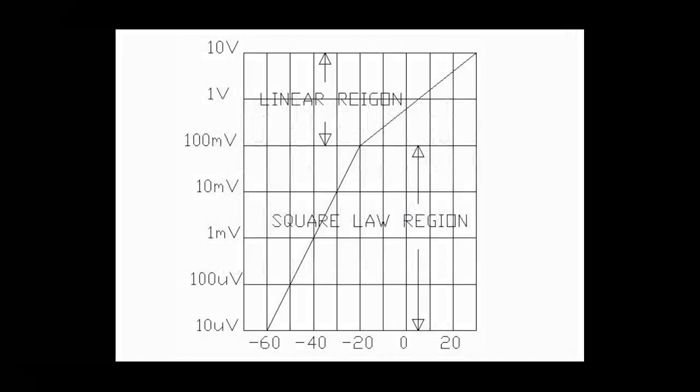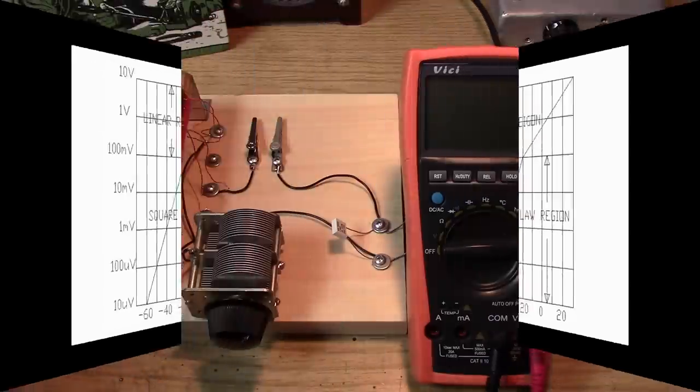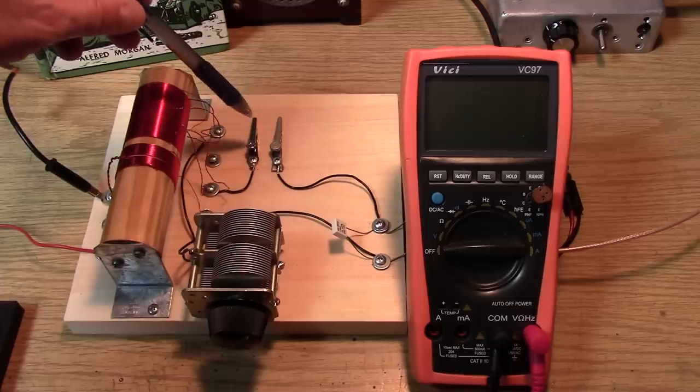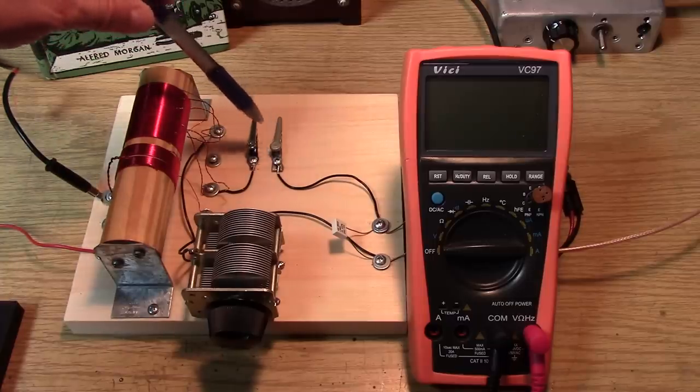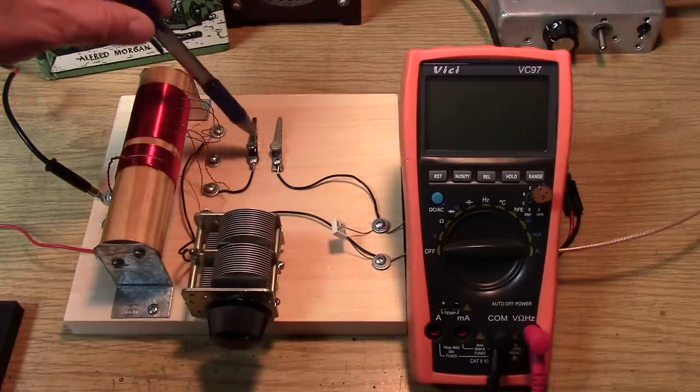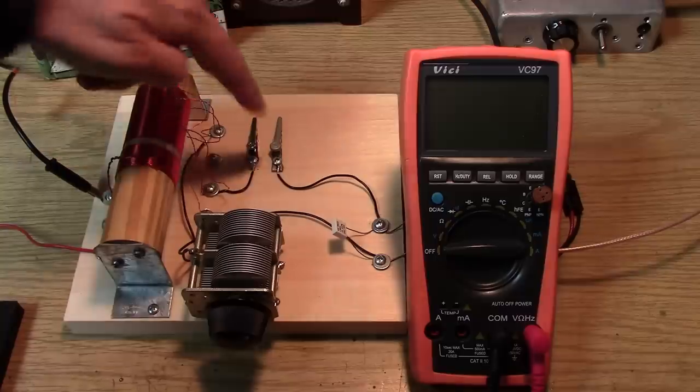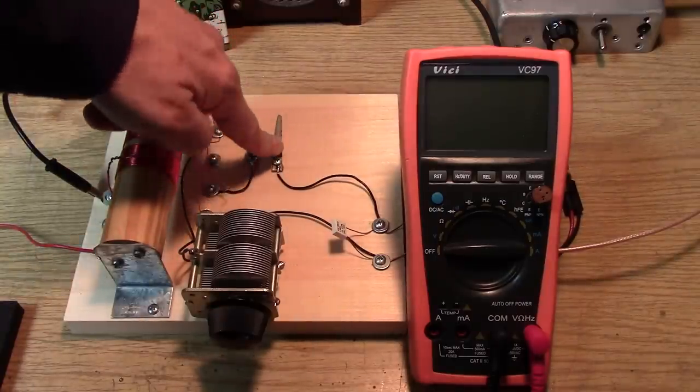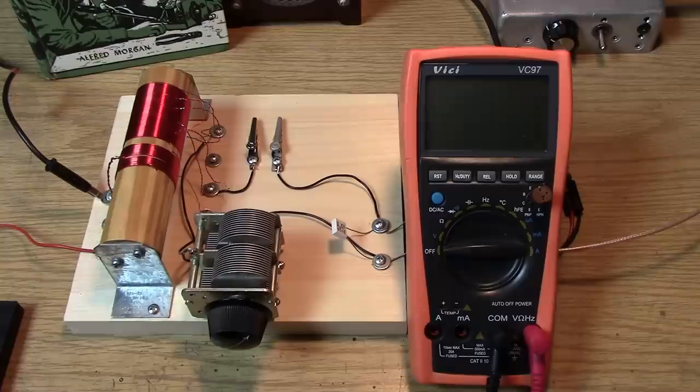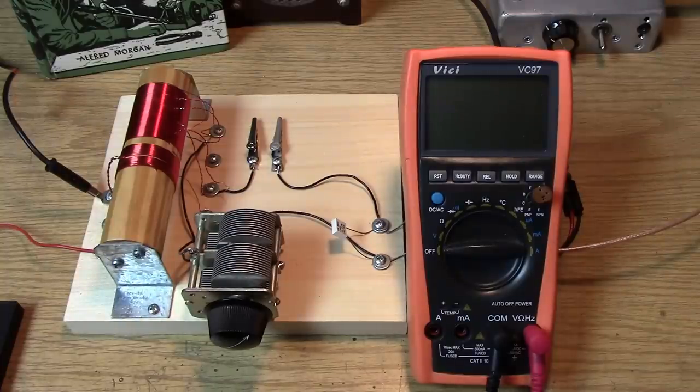I have replaced our little screw and washer setup with a pair of alligator clips. We can push these alligator clips and install various diodes into our crystal set and look at our AC millivolt meter to see what the detected audio looks like.